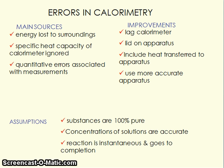Things we can do to improve this — a common exam question: to overcome heat loss, you could lag the calorimeter by putting insulation around it. You can place a lid on the apparatus if there isn't one already. You can include the heat transfer to the apparatus by accounting for the specific heat capacity of the calorimeter, and to reduce quantitative errors you could use more accurate apparatus.